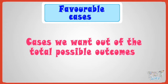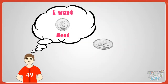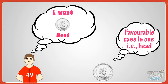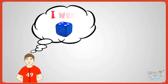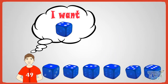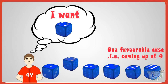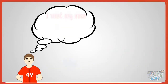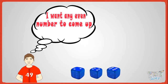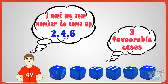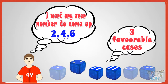Favorable cases are the outcomes we want out of the total possible outcomes. For example, if I want a head to come when I toss a coin, the favorable case is heads. Now, if I want number four to come when I throw a dice, there is only one favorable case — the coming of number four. Now, if I want any even number to come when I throw a dice, there are three even numbers: two, four, six. So there are three favorable cases — coming of two, four, or six.